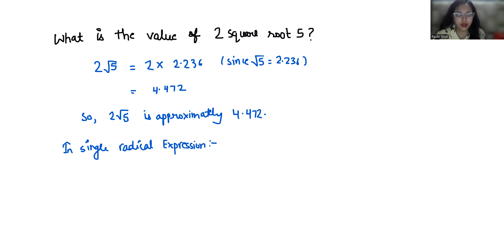2 root 5 is equal to under root 2 square times 5 which is equals to 4 times 5. That is root 20. So 2 root 5 in single radical expression is root 20.